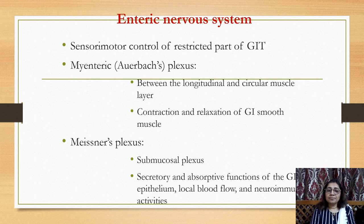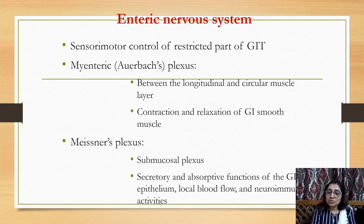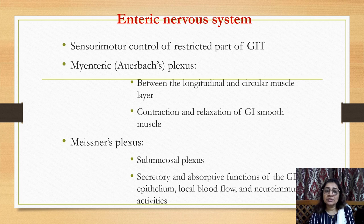The enteric nervous system provides sensory-motor control of the gastrointestinal tract. The myenteric (Auerbach's) plexus lies between the longitudinal and circular muscle layers of the intestine and controls contraction and relaxation of GI smooth muscle. The Meissner's (submucosal) plexus controls secretory and absorptive functions of the GI tract epithelium, local blood flow, and neuroimmunological activities.